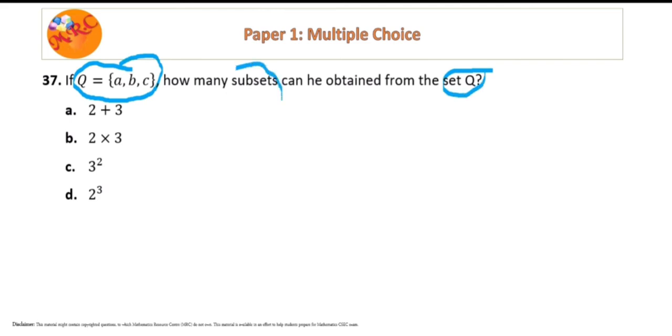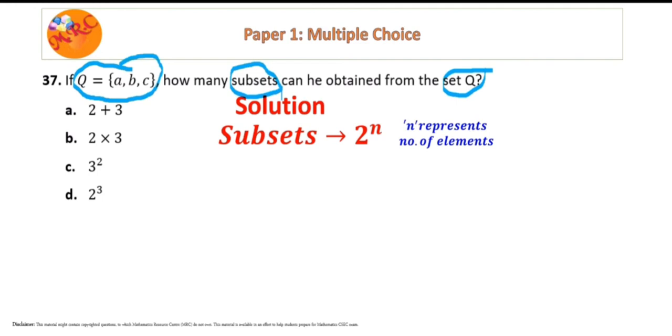We're interested in the subsets, and we know there's a formula for this. To find the number of subsets we can get from a set, it is 2 raised to the power n, where n is the number of elements, representing the number of elements in the set.